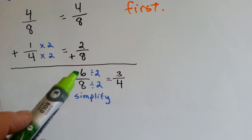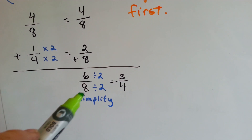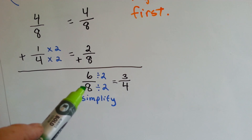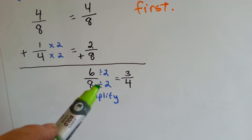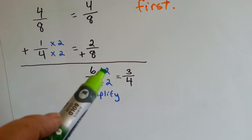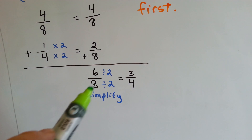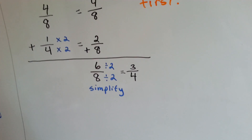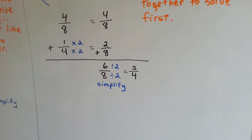Now this needs to be simplified. We ask ourselves what number can both be divided by — not 3, because it won't go into 8, but they both can be divided by 2. 6 divided by 2 is 3, 8 divided by 2 is 4, and we end up with 3 fourths, and it's simplified as far as it'll go.